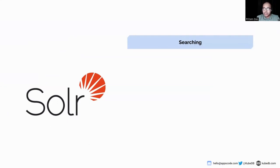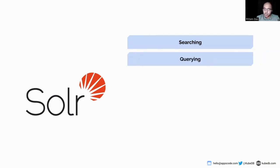Solr is a document retrieval library responsible for document retrieval and application analysis. It can process structured data, unstructured data, or metadata. We can search and query data on the basis of certain keywords, and we can also categorize the search results into various facets or groups based on certain keywords — this feature is called faceting.